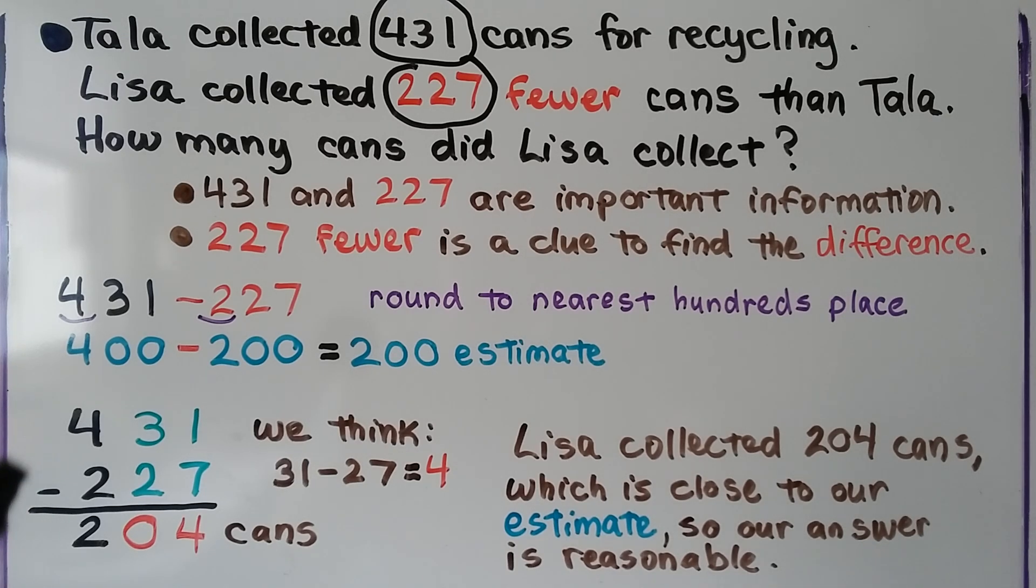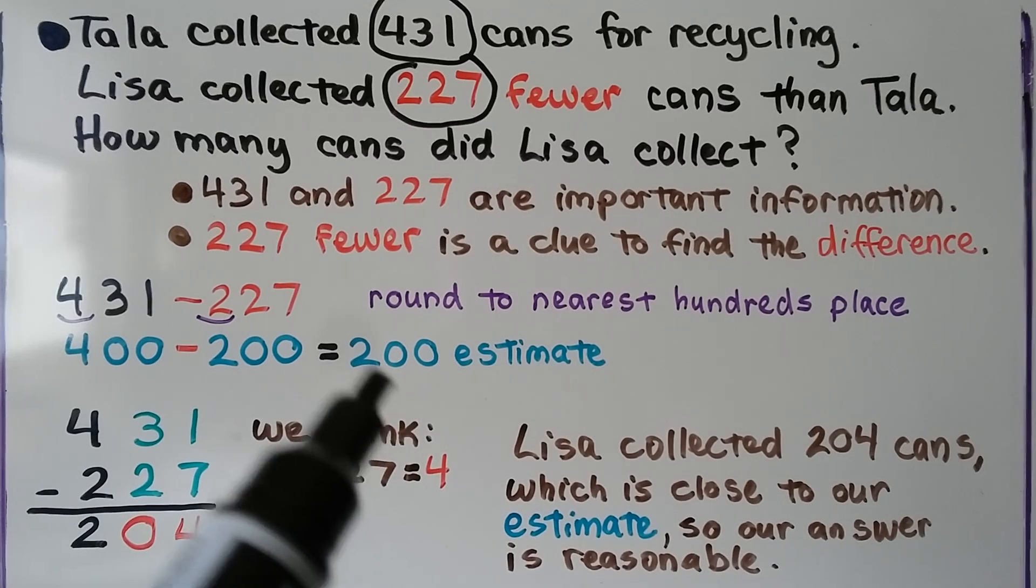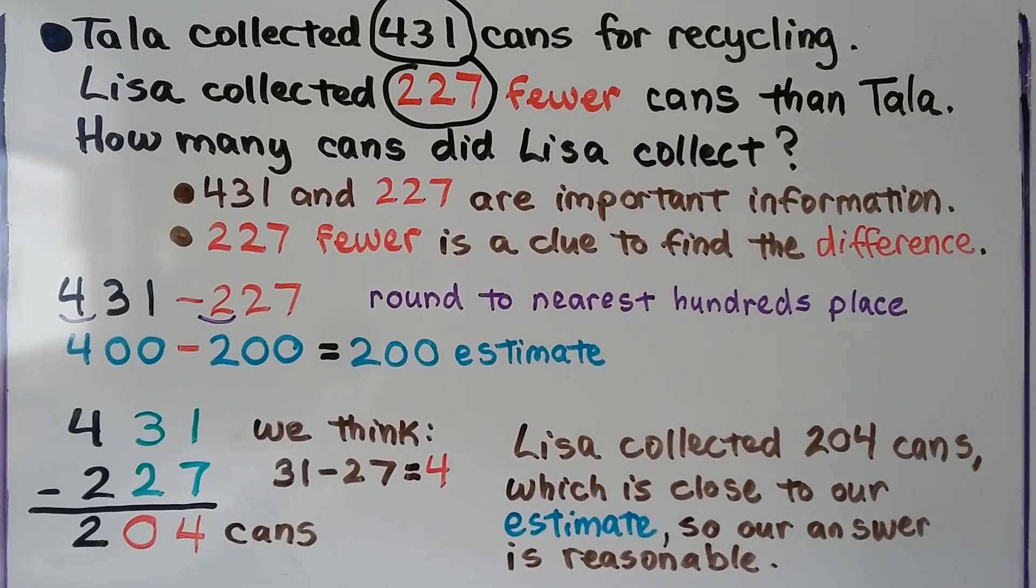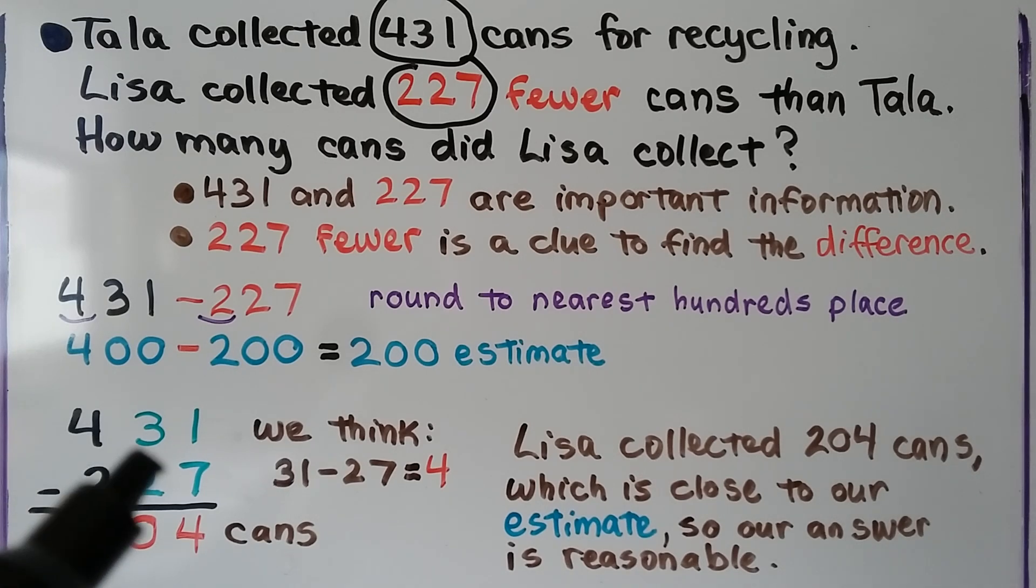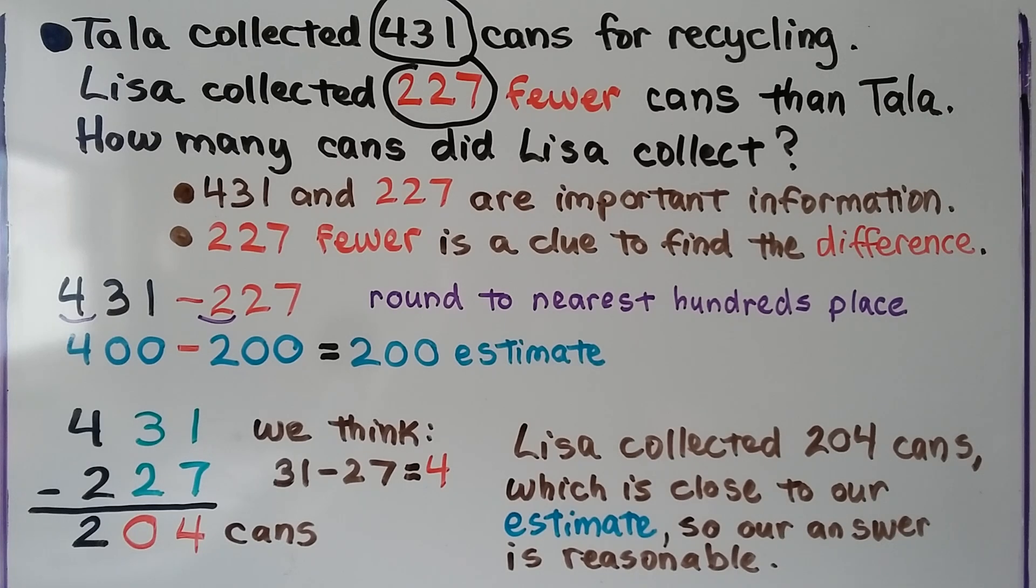Now we have 431 minus 227, and we know our answer should be around 200 to be reasonable. We see that the 1 is less than the 7, so we think we can use combined place values. We'll think of it as 31 ones and 27 ones. 31 ones minus 27 ones would be 4 ones.